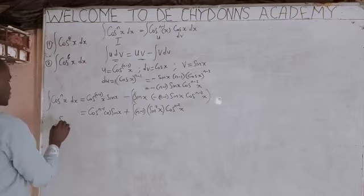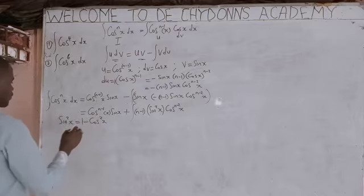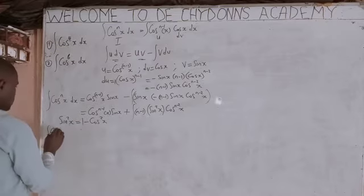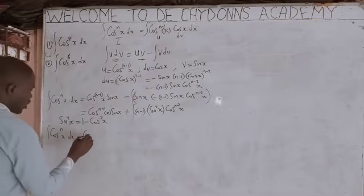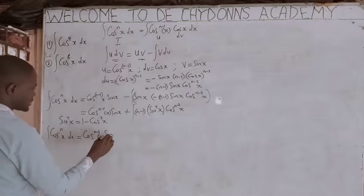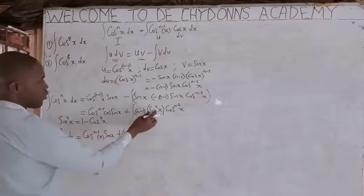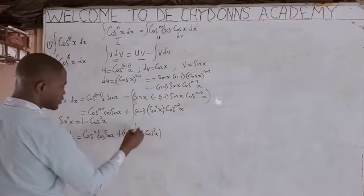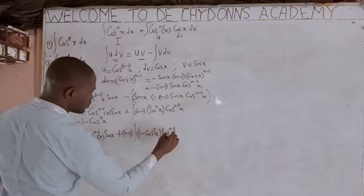Remember that sin²(x) equals 1 minus cos²(x). So when we said integration of cos^n(x) dx equals cos^(n-1)(x)·sin(x) plus (n-1) times integration of (1 minus cos²(x)) times cos^(n-2)(x) dx.